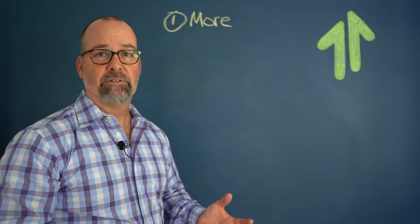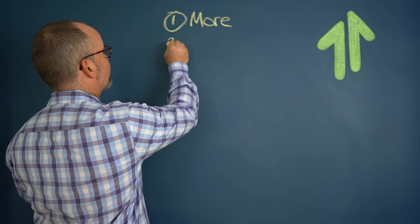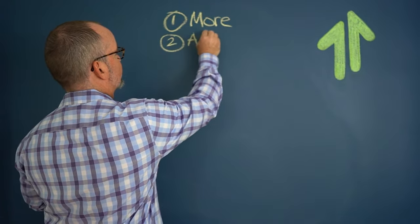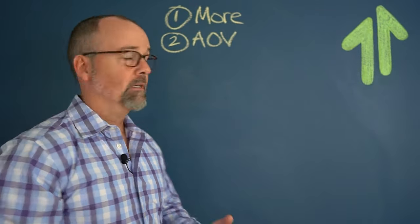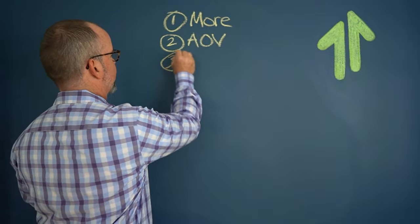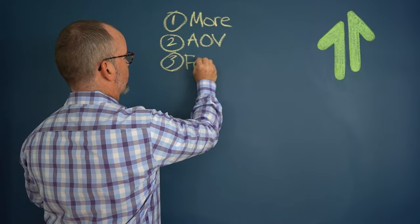The second one is every time those customers buy, increase their average order value, or get them to buy more stuff when they buy from you. And the third way is to get them to buy more frequently.